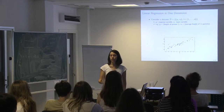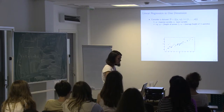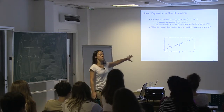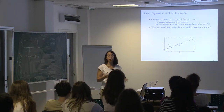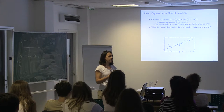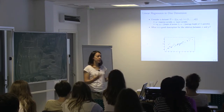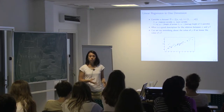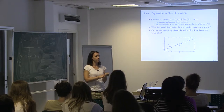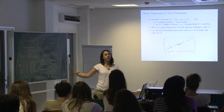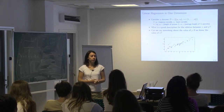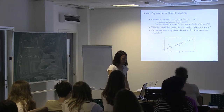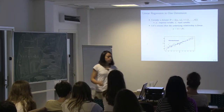For instance, we can have yi — we want to predict the height of person i by looking at the average height of his or her parents. If we saw this picture, what could be a good description for the relationship between x and y? What kind of pattern or trend do we observe? Can we say something about the value of y if we know the value of x — so if we know the average height of a couple, can we predict the height of their children?